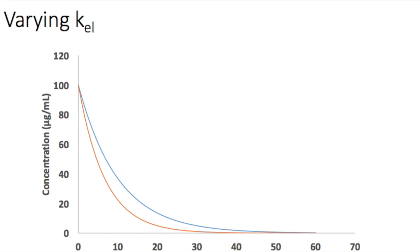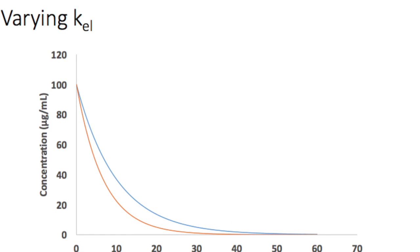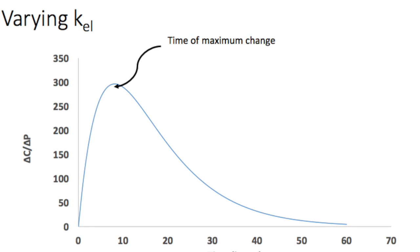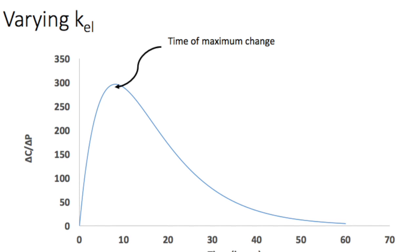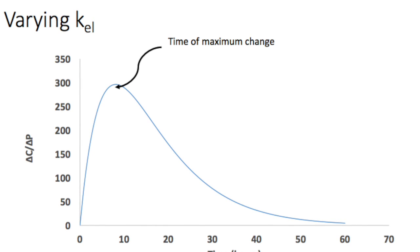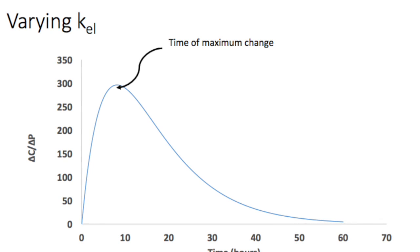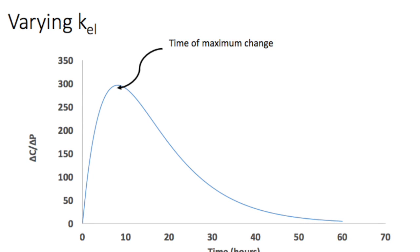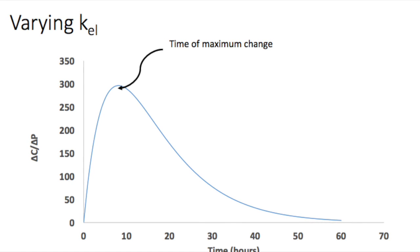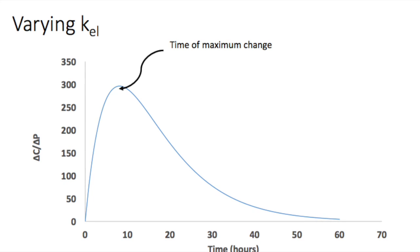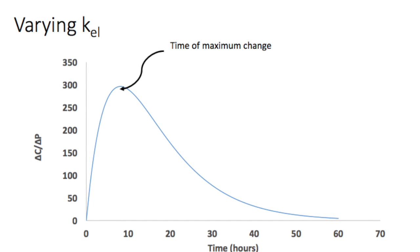In this case, I've varied K elimination. Then you take the simulated data for those two curves, and you calculate the ratio of the difference between the concentrations that are predicted for each time point and the difference in the parameter values. So the difference in the parameter values will be the same for each time point, but the difference in the concentrations will be different for each time point. And then you plot that ratio versus time.